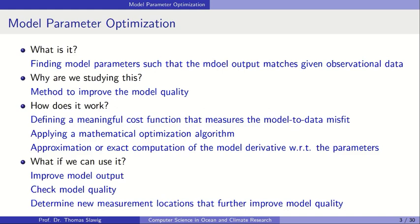If we can do this, we can improve the model quality. We can also check model quality — for example, if we have optimized parameters and still don't get a reasonable result, then this is obviously not a good model. Additionally, on top of the optimization, we can try to determine new measurement locations that will further improve the model quality.